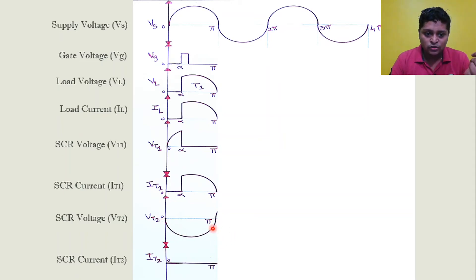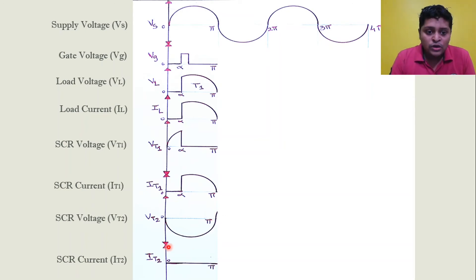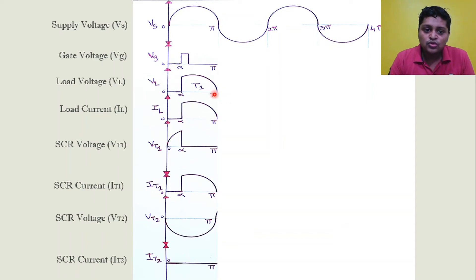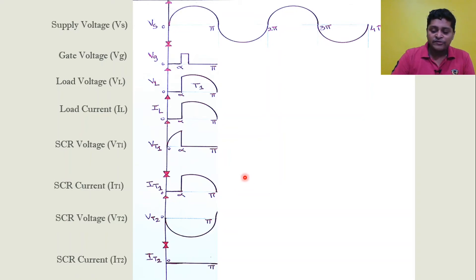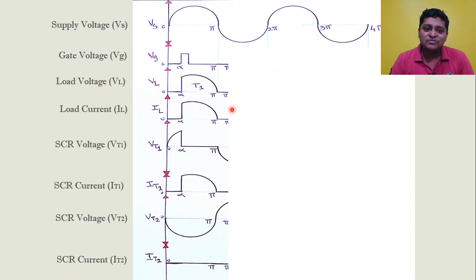With T2 in reverse bias acting as an open circuit, the full voltage develops across it. Importantly, the negative voltage across T2 equals twice Vm — it handles both the upper and lower secondary voltages simultaneously. This is a very high voltage. At the instant π, supply voltage reaches zero, load current falls to zero, and T1 turns off. We then enter the negative half cycle, where T1 is in reverse bias and T2 is in forward bias, but both thyristors remain off until the gate pulse arrives.